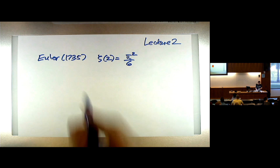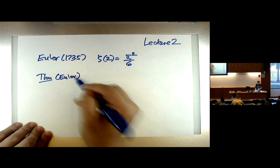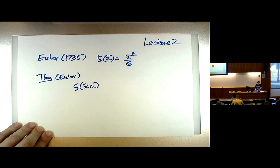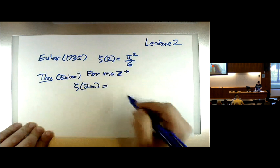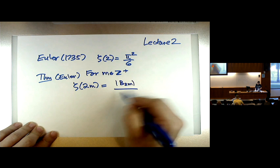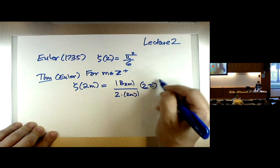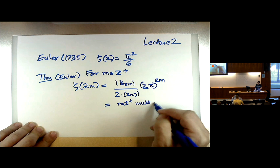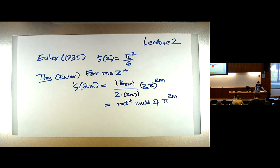What he actually showed was much greater than that. He showed that the zeta function — he didn't call it the zeta function, he just wrote out the formula — the zeta function at even numbers has a formula as a rational multiple of a power of pi. So zeta of 2m equals the absolute value of B_{2m} over 2 times (2m)! times (2π)^{2m}.